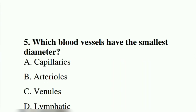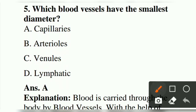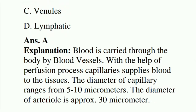Fifth question: which blood vessels have the smallest diameter? Option A: capillaries. Option B: arterioles. Option C: venules. Option D: lymphatics. The answer is A, capillaries, which have the smallest diameter. Blood is carried through the body by blood vessels. With the help of the perfusion process, capillaries supply blood to the tissues. The diameter of capillaries ranges from 5 to 10 micrometers, while the diameter of arterioles is approximately 30 micrometers.